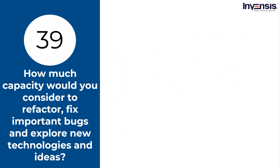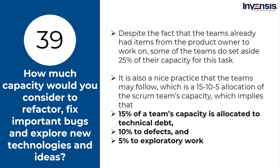Scenario question: How much capacity would you consider to refactor, fix important bugs, and explore new technologies and ideas? The team commits sprint items according to available capacity when planning the sprint. To achieve optimal execution, the team should devote between 80 and 90% of its overall capacity — anything higher will impede performance. Bugs, refactoring, and research all need regular attention to avoid accumulating technical debt. Some teams set aside 25% of their capacity for this task. A good practice is a 15-10-5 allocation: 15% for technical debt, 10% for defects, and 5% for exploratory work. If the team can stick to these deadlines, it will meet the code quality and maintenance requirements of most software programs.